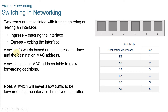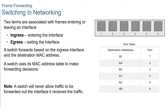A LAN switch maintains a table that is referenced when forwarding traffic through the switch. The only intelligence of a LAN switch is its ability to use its table to forward traffic. A LAN switch forwards traffic based on the ingress port and the destination MAC address of an Ethernet frame. There is only one master switching table describing a strict association between the MAC address and the port. An Ethernet frame with a given destination address always exits on the same egress port regardless of the ingress port it enters. An Ethernet frame will never be forwarded out the same port on which it was received.